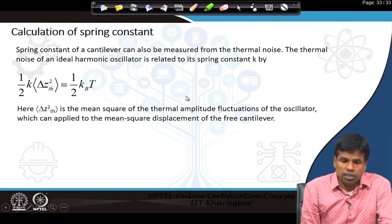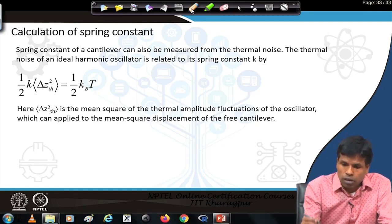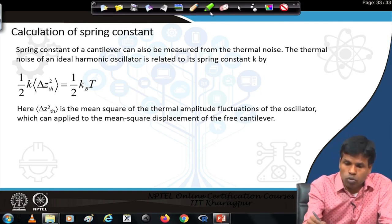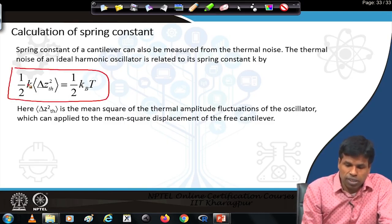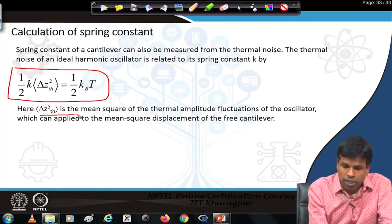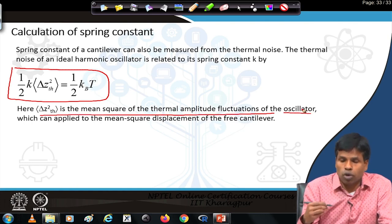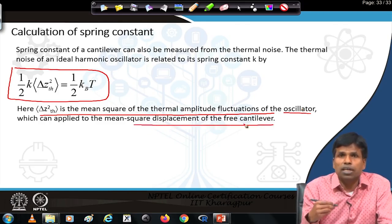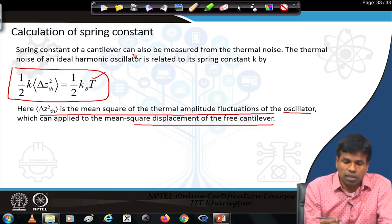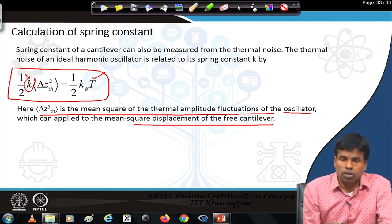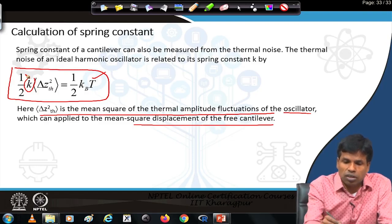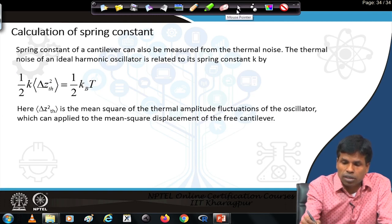The spring constant can be calculated from the geometry of the cantilever using the formula: k = E·W·T³/(4L³), where E is Young's modulus, W is width, L is length, and T is thickness. Using material constants and dimensions, one can calculate the spring constant, or vary dimensions to achieve a desired spring constant value. Another method is the thermal noise method: the thermal noise of an ideal oscillator is related to the spring constant by the equation where k is the spring constant and ⟨Δz²⟩_thermal is the mean square of the thermal amplitude fluctuation. One can measure the displacement of the free cantilever under a particular temperature and calculate the spring constant by this thermal method.